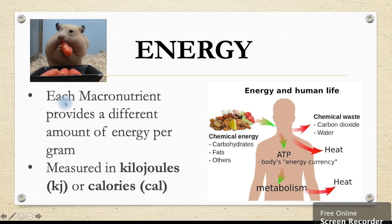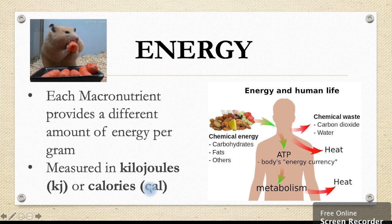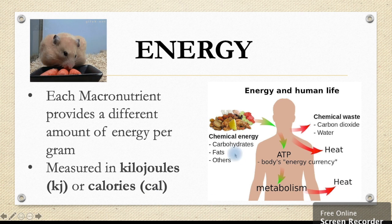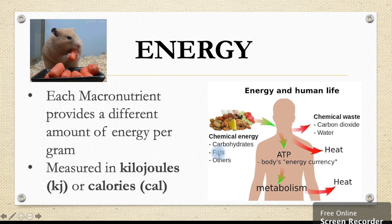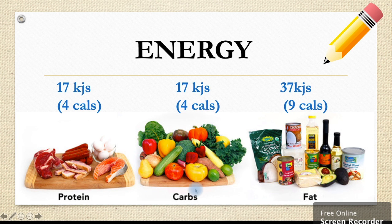Let's move on to energy. Each macronutrient provides a different amount of energy per gram. These are measured in kilojoules in places like Australia or calories in many other countries around the world. In this diagram it shows us that chemical energy in the form of carbohydrates, fats and proteins comes into our body, providing energy, movement and existence. Write these down: protein provides 17 kilojoules per gram, carbohydrates also 17 kilojoules per gram, and fat a lot more at 37 kilojoules per gram.